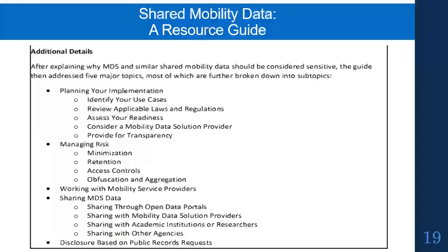Additional details vary by the type of reference. This particular example came from a guide to privacy from the Open Mobility Foundation — you'll be hearing more from the Open Mobility Foundation later today. The additional details provided here form an outline of what you'll find in that guide on privacy and shared mobility data.